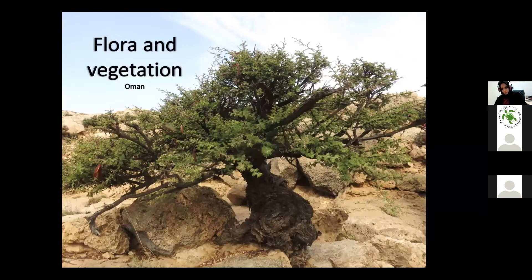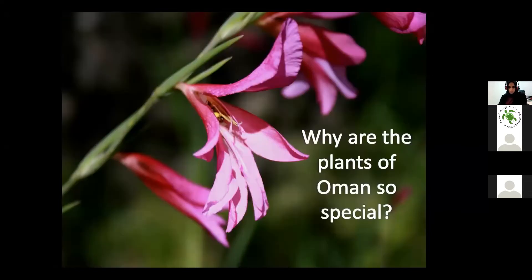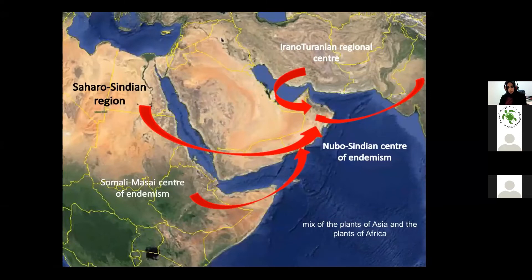What about the plants of Oman, and why do we need a botanic garden there? I will talk briefly about the flora and vegetation in the country and why it is special. Oman's location and its phytogeography in the region is a mix of plants from Asia and Africa, making it a special place for plants — shaped by its climate, topography, and all other environmental factors that help define the plant and plant-line diversity in Oman.